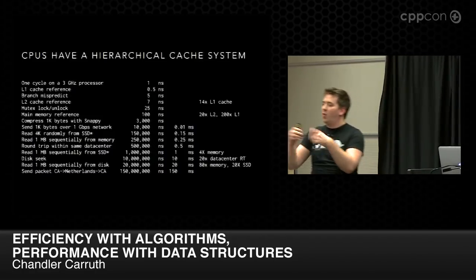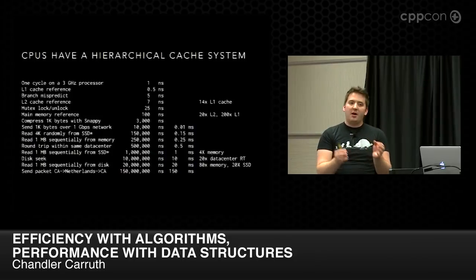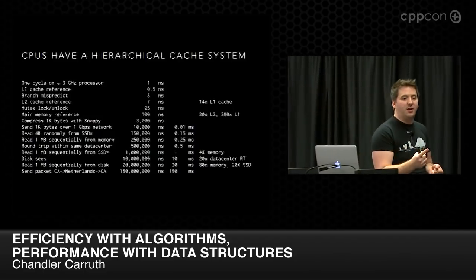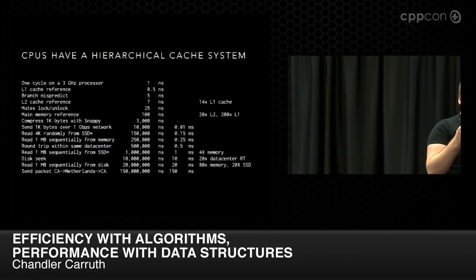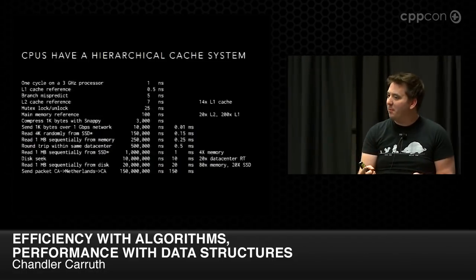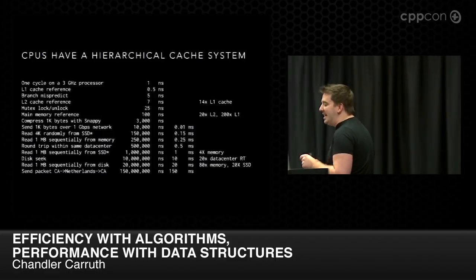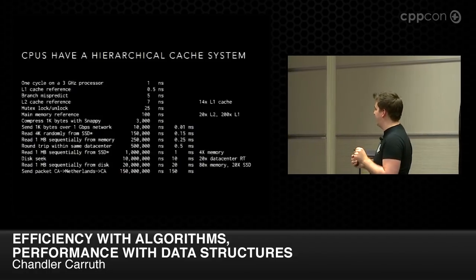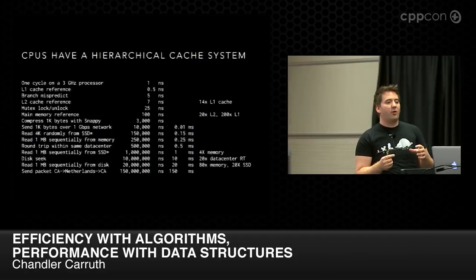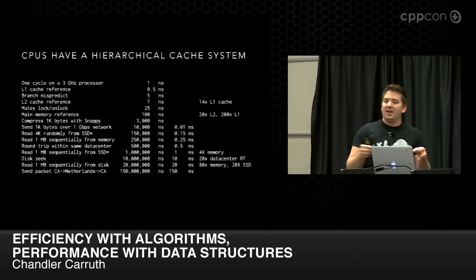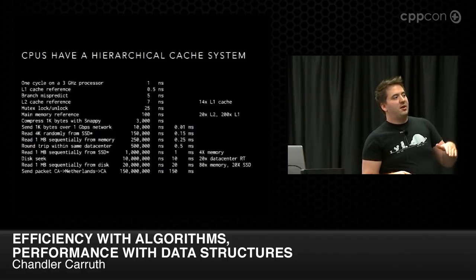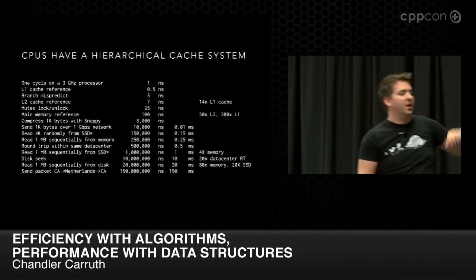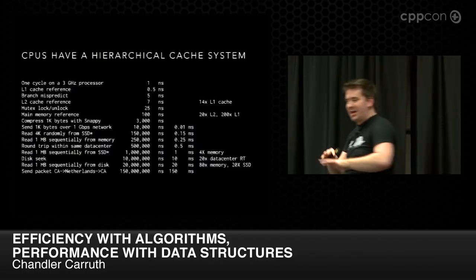We can execute around 36 operations in a single cycle, but it takes 100 cycles to get a byte of memory into the processor — we have a problem. The only solution is to get your data into the higher caches. Everything is designed around having contiguous data, small enough to stay populated in L1 and L2 caches. Modern processors also have an L3 cache that's even larger. It's caches all the way down.